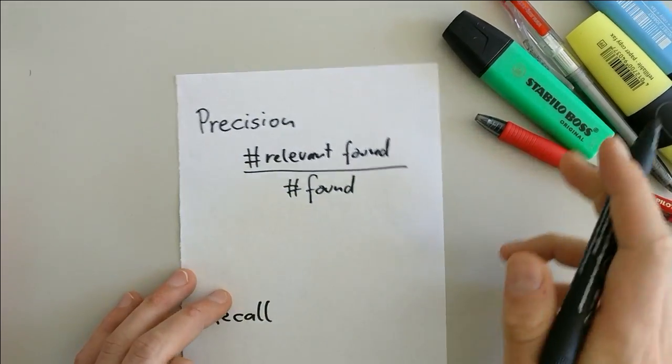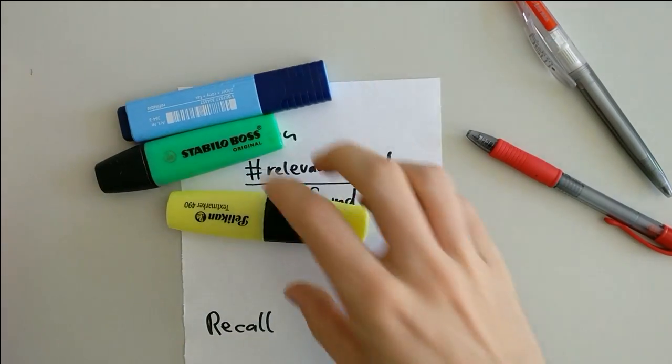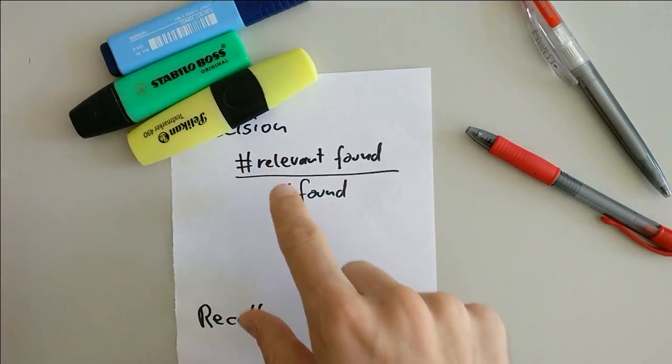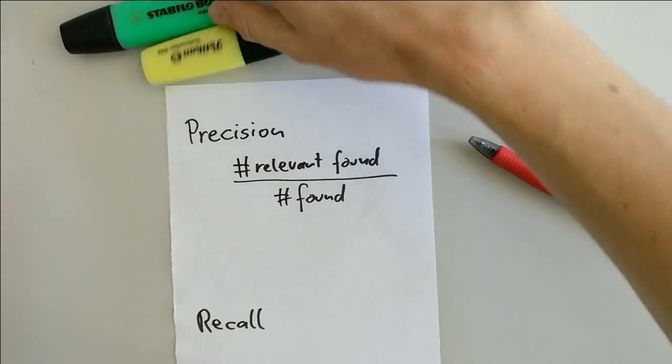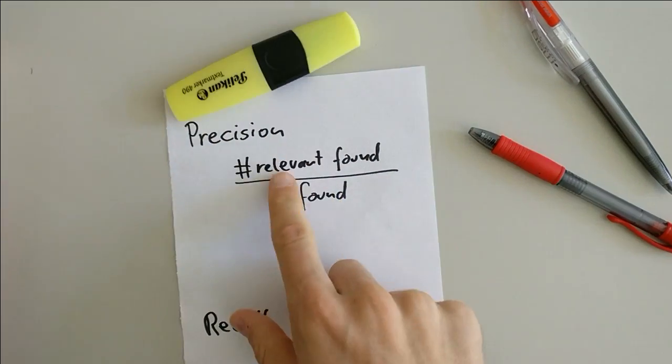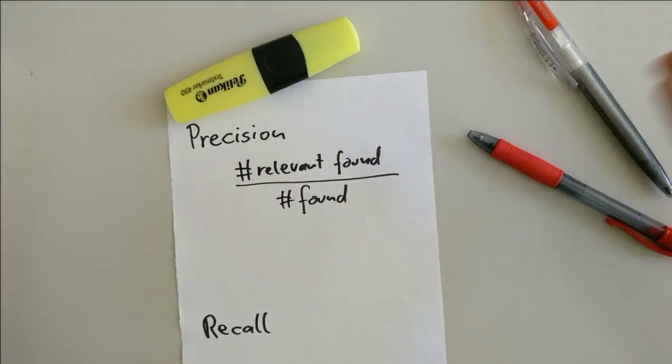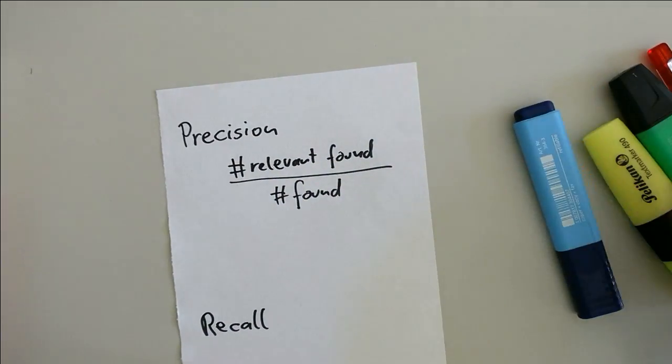So if you want to search for example for text markers and you find these three items here, then the relevant number of items which were found is three and in total three items were found. So the precision is three divided by three, which is one. And even if just this one text marker is found, the precision is one because one item is relevant divided by one item found. So everything which was found is relevant.